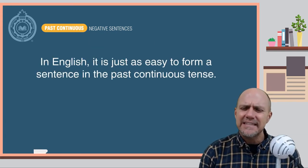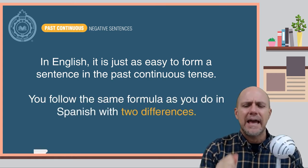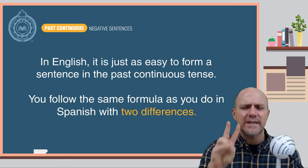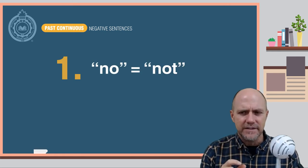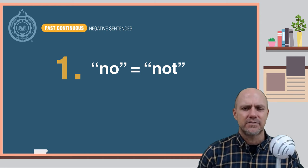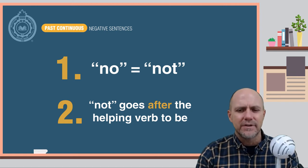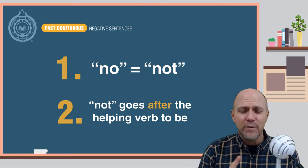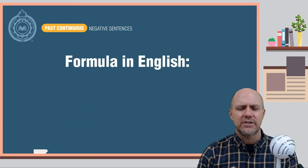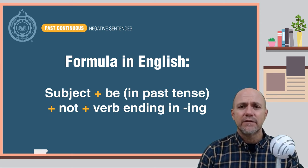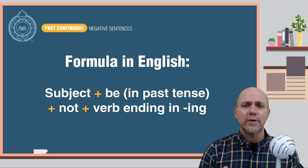In English, it is just as easy to form a sentence in the past continuous. You follow the same formula as you do in Spanish with two differences. The first difference is the word no in Spanish is not in English. The second difference is the word not goes after the helping verb to be, not before it, like in Spanish. Here is the formula in English: the subject, plus the verb be in the past tense, plus the word not, plus the verb ending in ing.